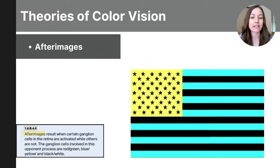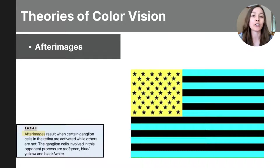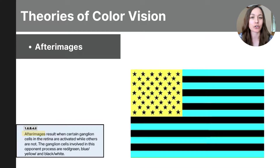The afterimage effect is evidence that helps us prove the opponent process theory — it shows that the brain processes colors in opposing pairs. When you tire out one color like red, its opposing channel, green, becomes more noticeable when you look away. The afterimage effect can be defined as the visual phenomenon where an image continues to appear in your vision after you've looked away from it, but in its inverted colors. You can test this with the flag on the screen.